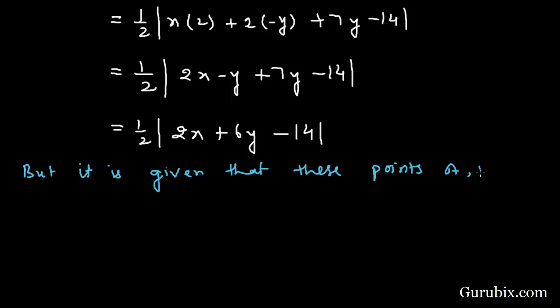But it is given that these points A, B and C are collinear. Therefore, area of triangle ABC will be equal to 0.